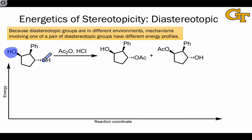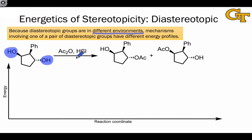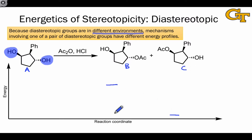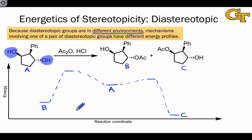Diastereotopic groups, such as the two hydroxyls shown here, are in different spatial environments. As a result, reactions of one or the other of a pair of diastereotopic groups leads to two different diastereomeric products. You can verify that the two molecules shown as the products are in fact diastereomers. If we label the reactant A and the two possible products B and C, the two pathways leading to B and C have completely different energy profiles. The diastereotopic relationship between the groups tells us that these reaction pathways will be different.